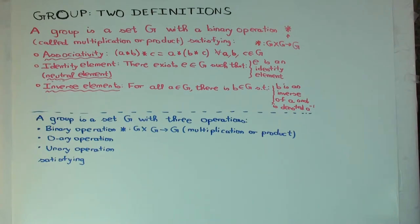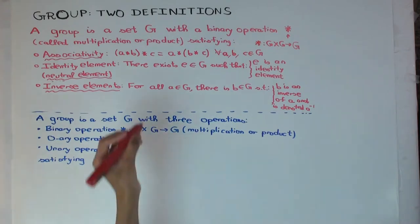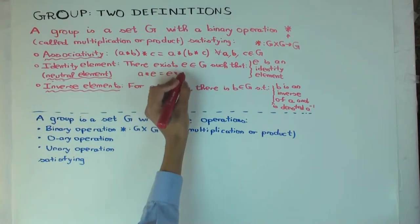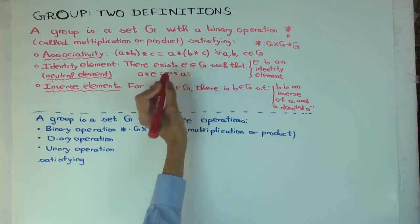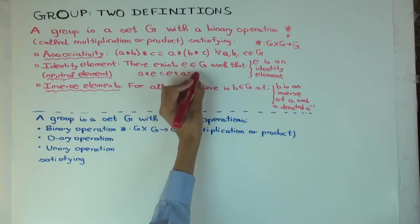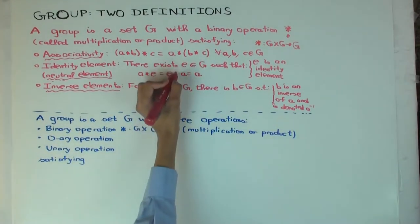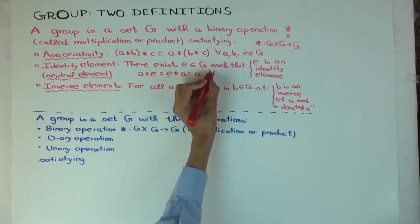The next condition is the identity element. There exists an element e in G, called an identity element, such that a star e equals e star a equals a, for all a in G.